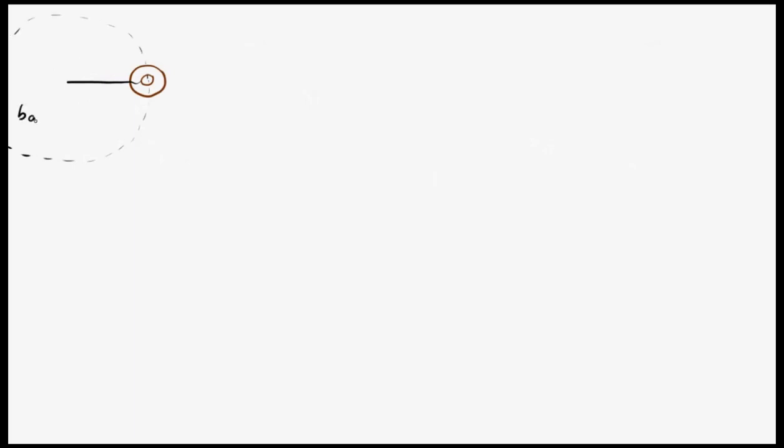I'm going to draw four different situations that are all uniform circular motion. First, imagine you take a bagel, you tie it to a string, and then you swing it around your head. I'm going to draw that from above. So we've got a bagel and a string, swing it around in a circle.